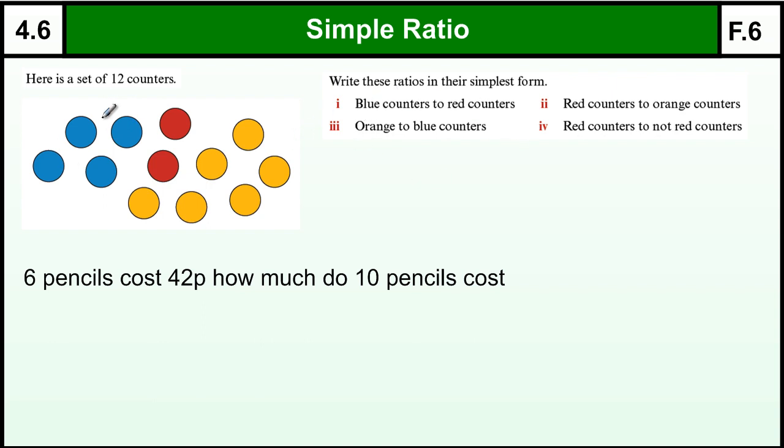So we've got some counters, 12 in fact, 4 blue, 2 red and 6 yellow. Now writing ratios in their simplest form, blue counters to red counters. So this ratio is all about writing numbers, basically what you can see.